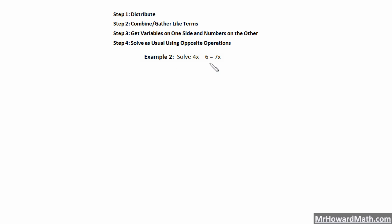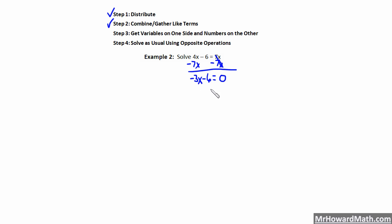Here we have example 2 — the same problem as example 1. Step 1: distribute — no need. Step 2: combine and gather — no need. Step 3: get variables on one side. In example 1 we subtracted 4x from both sides. This time I'm going to subtract 7x. The opposite of plus 7x is minus 7x. So 7x minus 7x is 0. I bring down the equal sign, and then 4x minus 7x gives me negative 3x, minus 6.